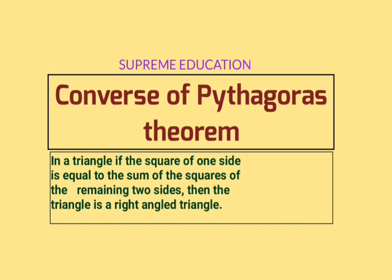In Pythagoras theorem, a right angle triangle is given and we have to prove the square of the hypotenuse equals the sum of squares of remaining two sides. In the converse, the given is that the square of one side equals the sum of squares of remaining two sides, and we have to prove the triangle is a right angle triangle. By interchanging 'given' and 'to prove', we get the converse.